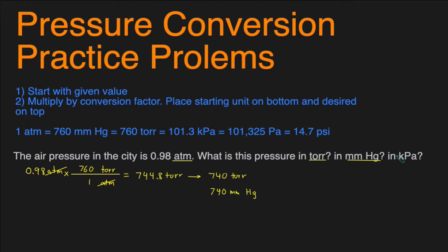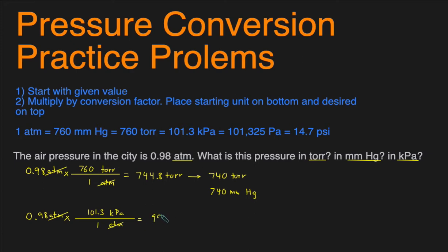The last part asks us to convert 0.98 ATM into kPa — kilopascals. We use the same approach: start with the given amount, 0.98 ATM, and multiply by the conversion factor. Put ATM on the bottom to get rid of it, put kPa on top. The conversion factor shows 101.3 next to kPa and 1 for ATM. The ATMs cancel out and we're left with kPa. So we do 0.98 times 101.3 and that gives us 99 kPa, keeping two sig figs.